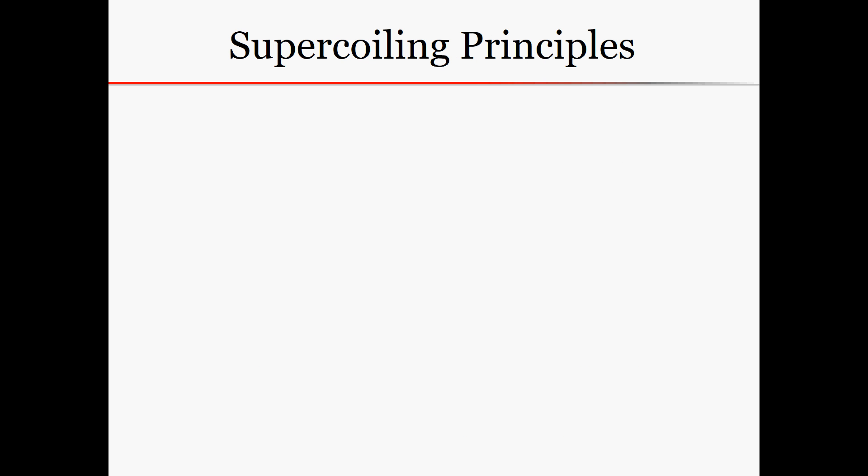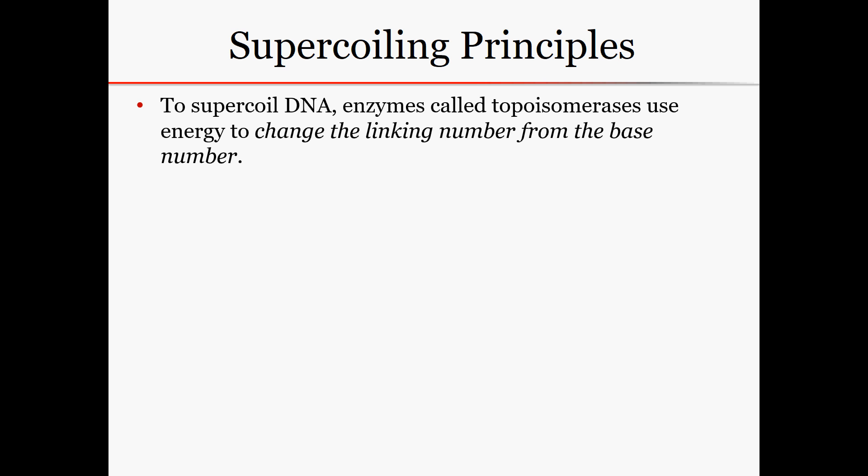To review some supercoiling principles: to supercoil DNA, enzymes called topoisomerases use energy to change the linking number from the base number. The base number you calculate is always for relaxed DNA, and we need to use energy to break the covalent backbone, pass the other backbone through, and then put it back together. If we're supercoiling, we're changing the linking number up or down, and the reverse of that would be relaxation, where we go from a supercoiled state back to relaxed. There are enzymes that do both.